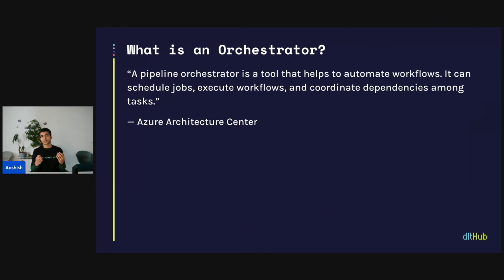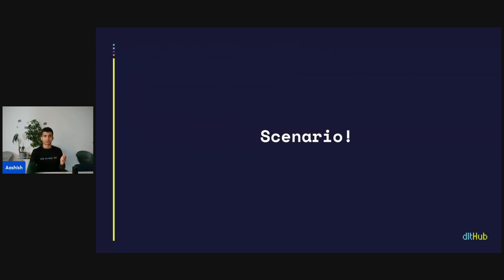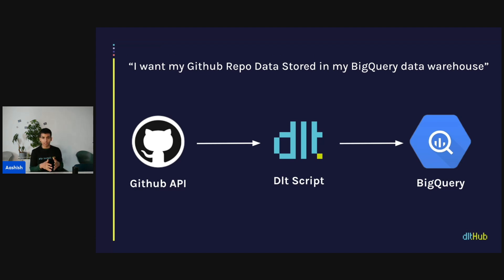Let's go over what an orchestrator is. According to the Azure Architecture Center, it is a tool that helps automate workflows — it can schedule jobs, execute workflows, and coordinate dependencies among tasks. But let's tailor this for DLT users with a scenario. Say I have a GitHub repo and I want the related data stored in a BigQuery data warehouse. Your GitHub stores valuable information about projects, issues, collaborators, and so on, so there's real benefit to having BigQuery store this data for extracting insights later.